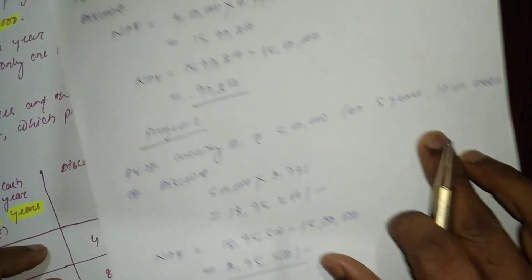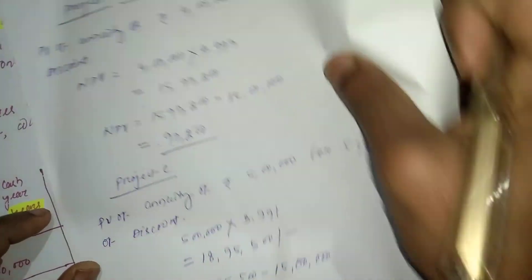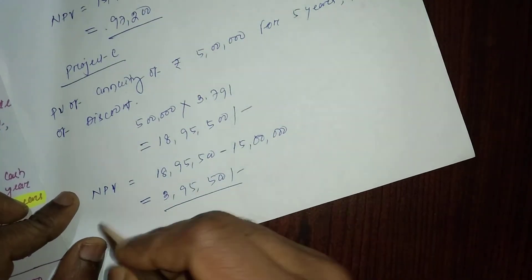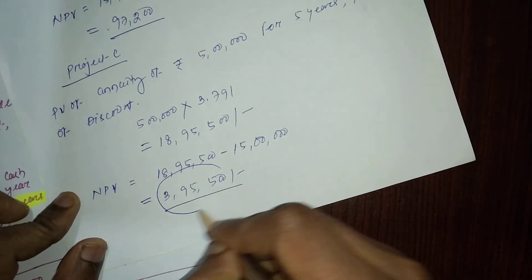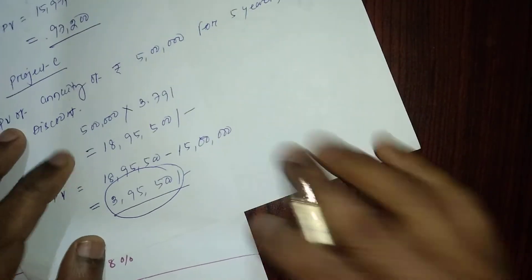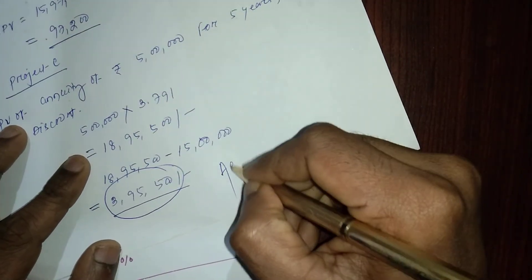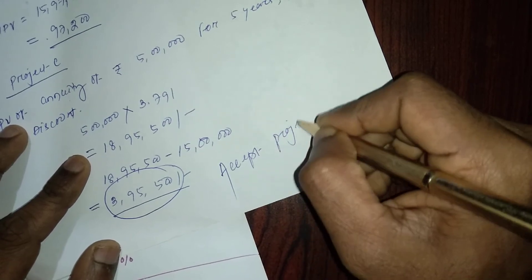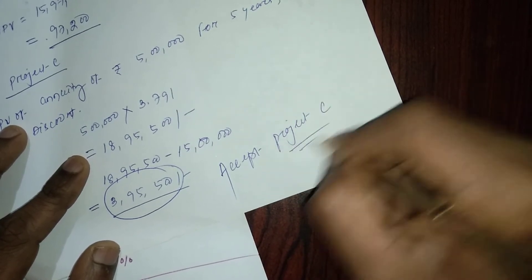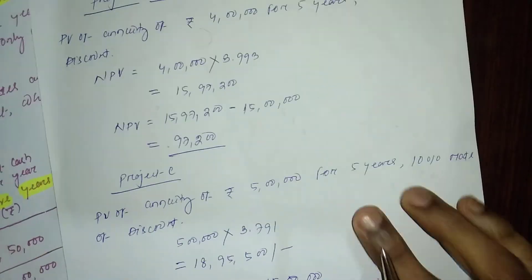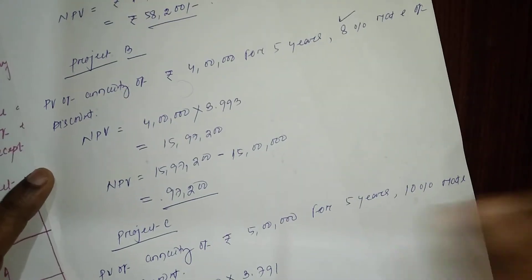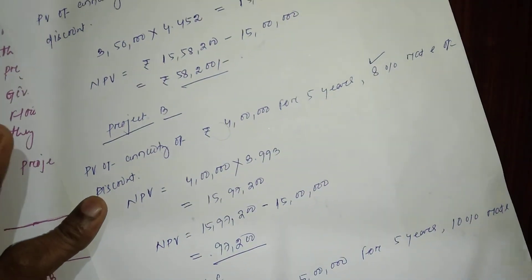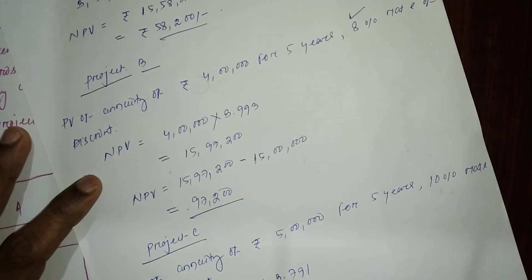So Z Z and Co limited will accept Project C because of the higher net present value. Here you can calculate with the calculator trick very easily, and you can get up to six marks without applying any formula.